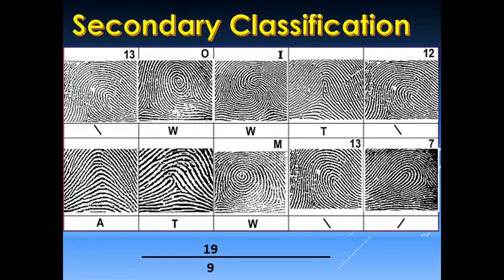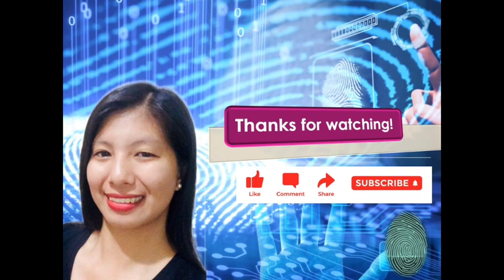Since we are done with our secondary classification, we place it on the right side of the primary classification in our classification line. Take note that the numerator and denominator for secondary classification must be aligned to one another. In our example we have 4 lines, and the fifth line is both a dash, simply meaning that blocks 5 and 10 are either ulnar loops or whorl patterns.